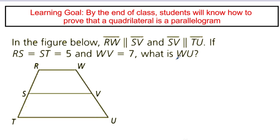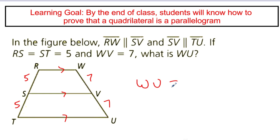Using that on a simple example: in this trapezoid, Rw and Sv are parallel, and Sv and Tu are parallel, so all three lines are parallel. Rs is 5, St is 5, and Wv is 7. They're asking for Wu, the length of the long segment. Since the left-hand side has congruent parts, the right-hand side also has congruent parts — so Wv is 7, meaning Wu equals 7 plus 7, which is 14.